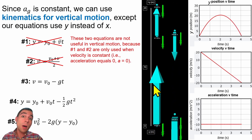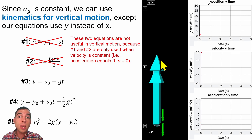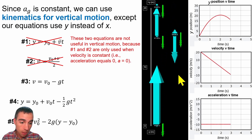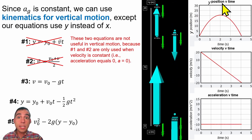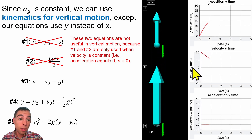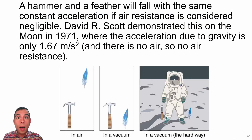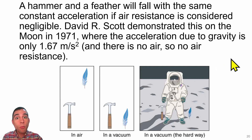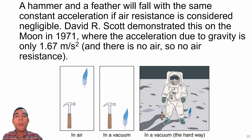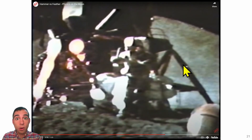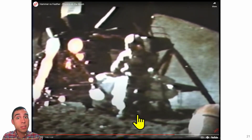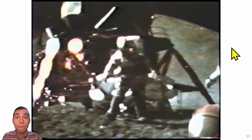Here we see an object thrown up with a velocity of 20 meters per second. Eventually it experiences an acceleration due to gravity downward that causes it to come back down the way it came. We can see the graphs of y position versus time, velocity in the y direction versus time, and acceleration in the y direction versus time. The only reason why certain objects seem to fall faster than others is because of wind resistance in our everyday life. If we were to go to the moon and drop a hammer and a feather next to each other, we would see that with no air resistance, the acceleration due to gravity acts the same on both objects—and they hit the ground at the same time, experiencing negative 9.8 meters per second squared on Earth.